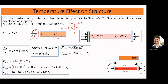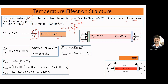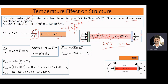Now to solve this problem, we need to consider a uniform temperature rise from room temperature of 25°C to 50°C, and we have to determine the axial reaction developing in the structure. Since the temperature rise is uniform throughout the member, remember there will be only axial forces. We need to calculate how much axial force is developing in the structure.